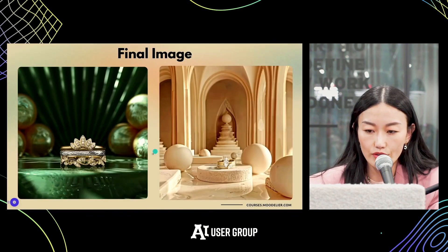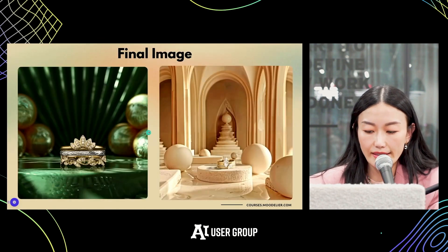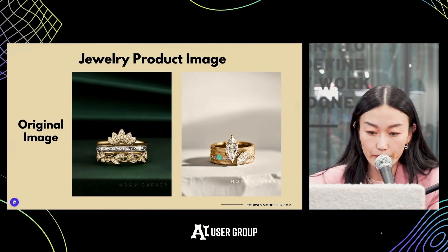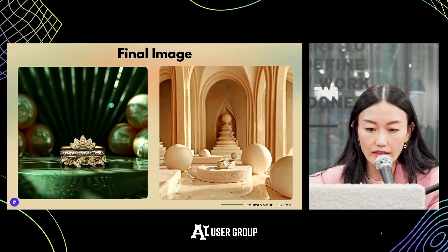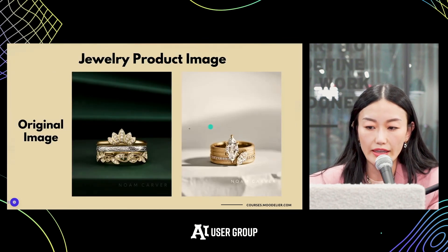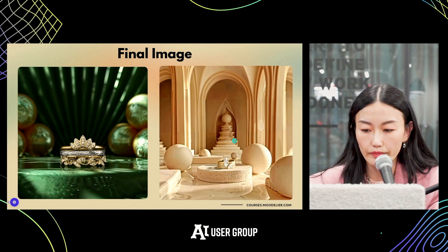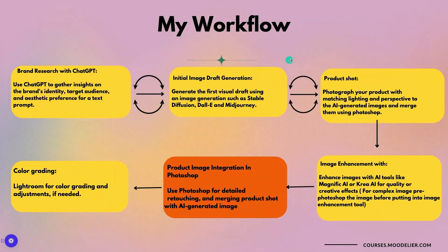For jewelry product images, these are original photos from the brand that I used to inspire my image generation. Because the photos were done beforehand, I used them to inform my text prompt — specifying a green or off-white background to try to match the lighting of the jewelry, making it look more authentic and real. Then I added reflections in Photoshop.